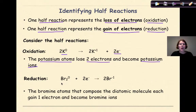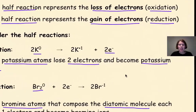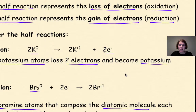In the reduction reaction, we have liquid bromine, Br2. The bromine atoms that compose the diatomic molecule will each gain one electron and become bromine ions. Diatomic bromine as a Lewis dot diagram can be represented like this. I have Br, and it has seven valence electrons, and then another bromine atom also with seven valence electrons.